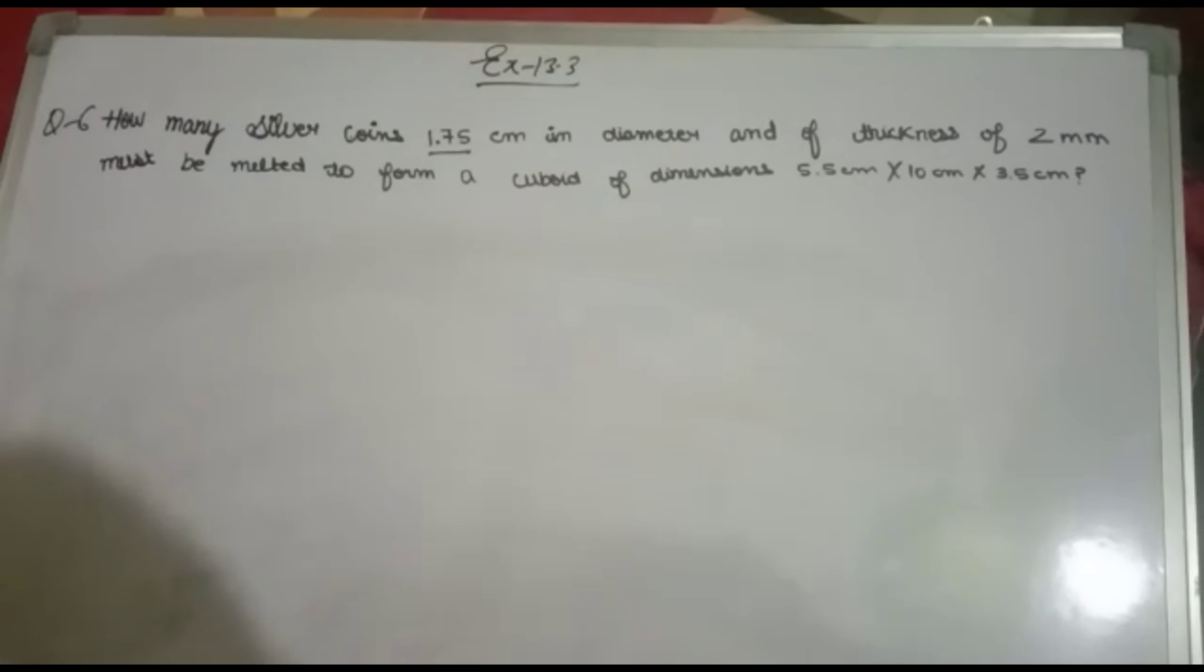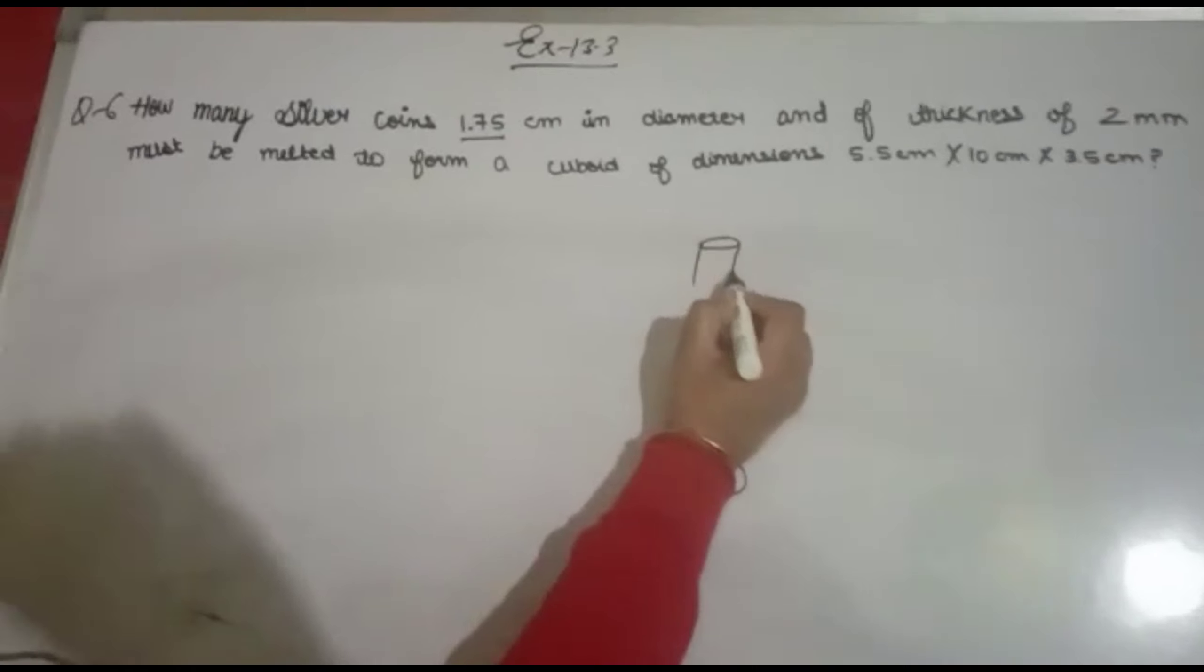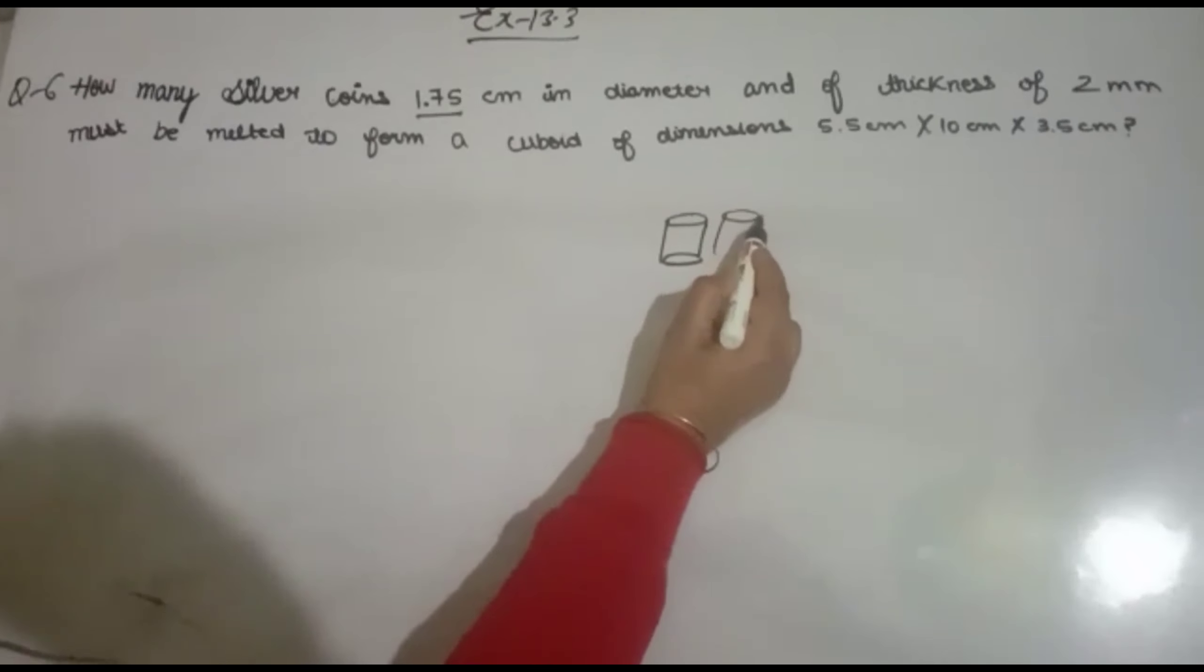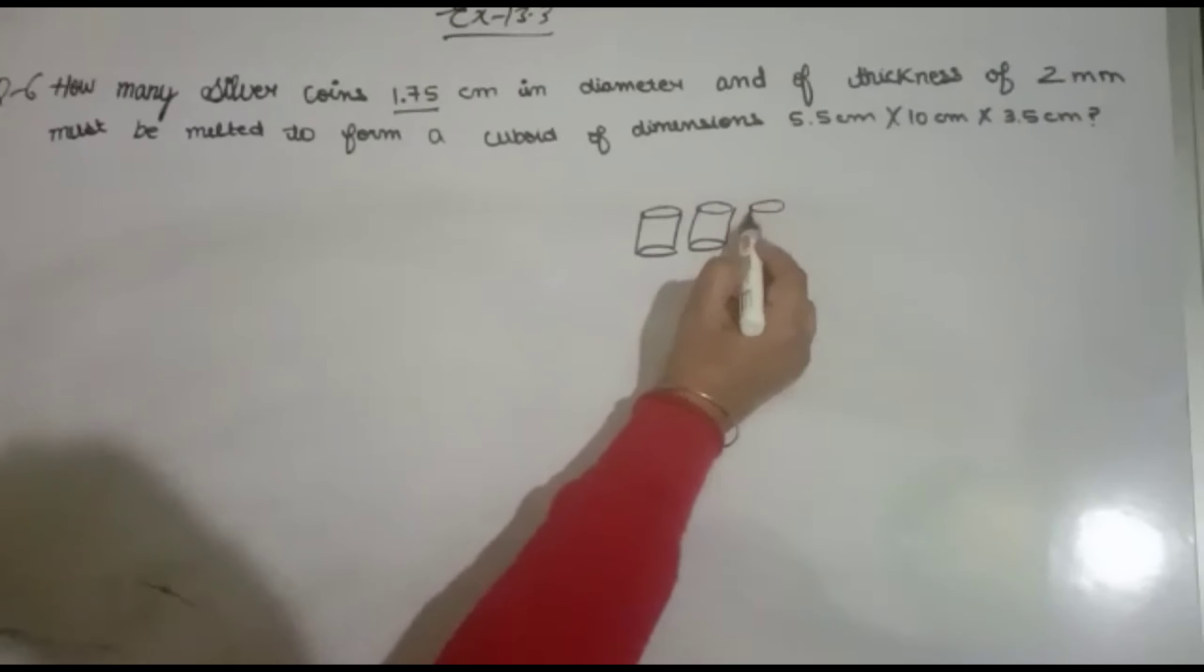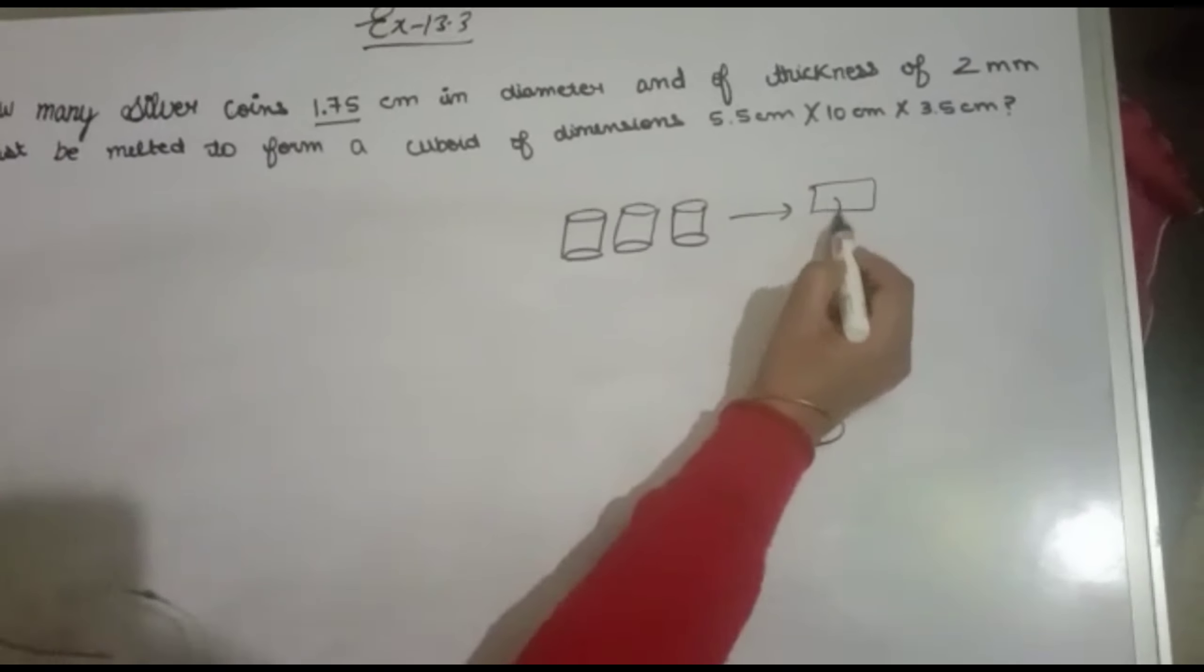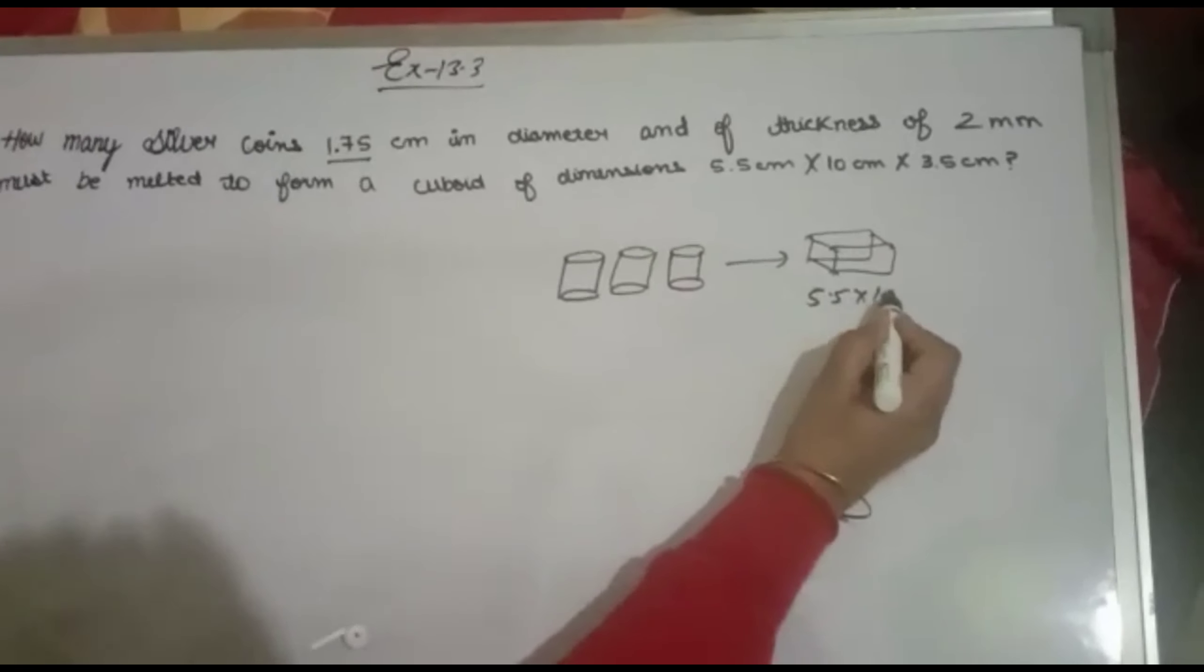Welcome to Math Helpers. Exercise 13.3, question number 6: How many silver coins, 1.75 cm in diameter and 2 mm thickness, shaped as cylinders, must be melted to form a cuboid with dimensions 5.5 cm × 10 cm × 3.5 cm?